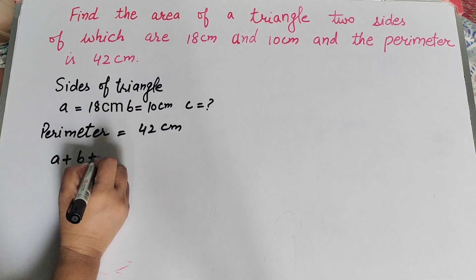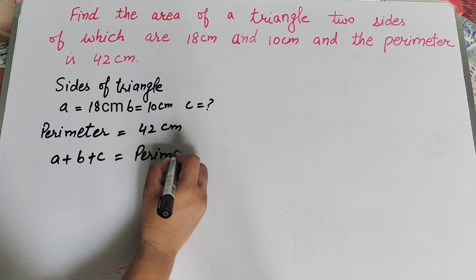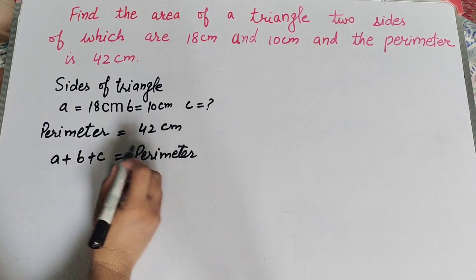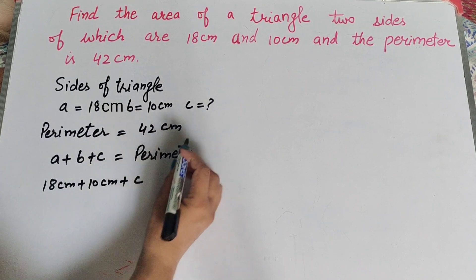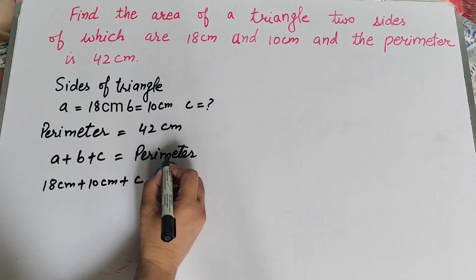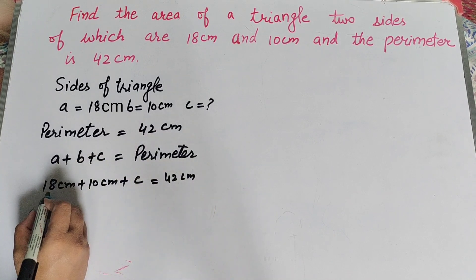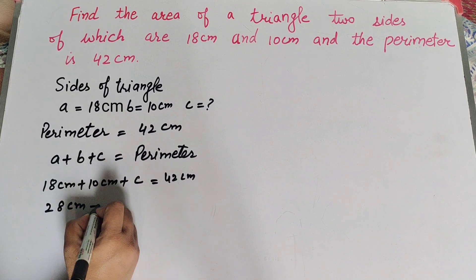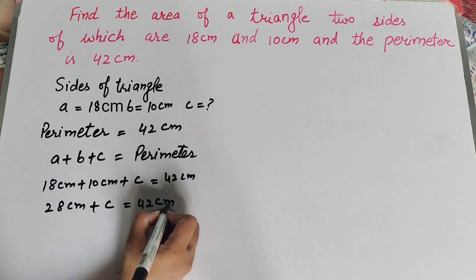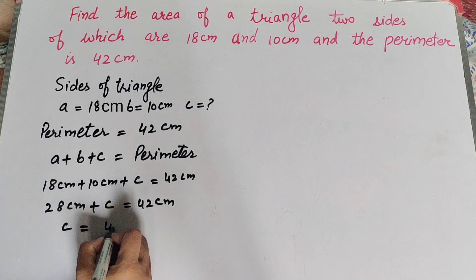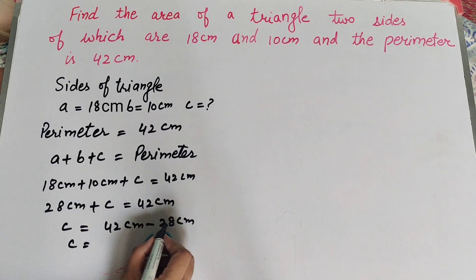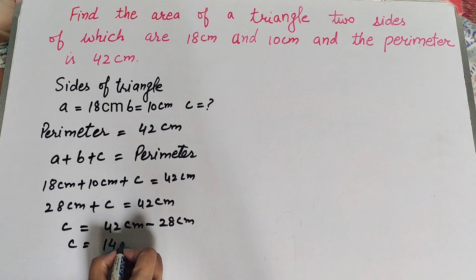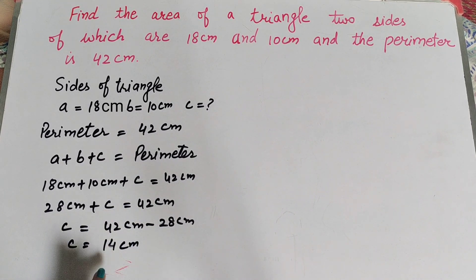First we find the third side of the triangle. We know the sum of three sides equals the perimeter: a plus b plus c equals perimeter. So 18 plus 10 plus c equals 42 centimeter. That gives 28 plus c equals 42, so c equals 42 minus 28, which equals 14 centimeter. The third side of the triangle equals 14 centimeter.